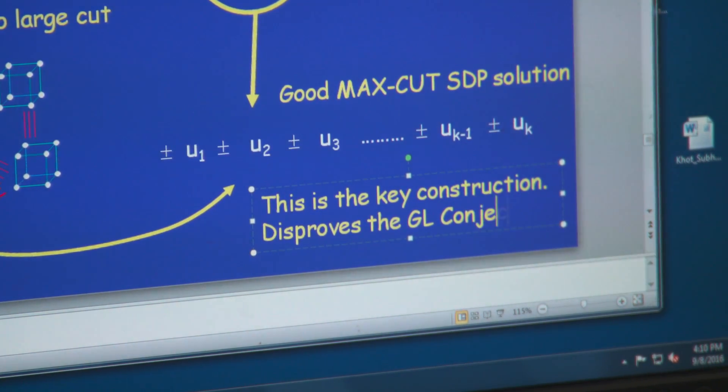Over the last several decades, computer scientists have identified a very large class of problems. These are known as NP-complete problems, which they would really like to solve fast. But now they have more or less accepted that these problems cannot be solved fast.